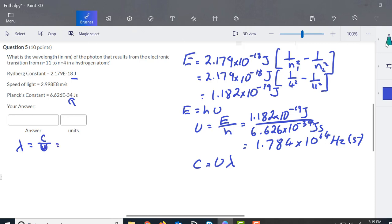And that's going to be 2.998, that's the speed of light, times 10 to the eighth meters per second, divided by the frequency which we've got over here, 1.784 times 10 to the 14 hertz or seconds to the minus 1.